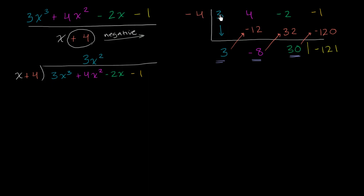When we did the synthetic division, we dropped this 3 straight down, and this 3 represented 3x squared. So this 3 and this 3x squared are really representing the same thing. But you might be saying, here we had to do some thinking — we had to say x goes into 3x to the third 3x squared times. Here, we just mindlessly dropped this 3 straight down. How did that work?